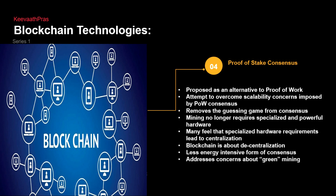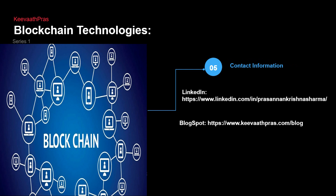As an alternative to proof of work, they are proposing proof of stake, which addresses scalability concerns and promotes going green by reducing electricity consumption. This removes the guessing game, which is extremely good. Miners no longer need specialized or powerful hardware — no intensive computation or propagation overhead. Blockchain is all about decentralization, and proof of stake achieves less energy-intensive consensus while also moving toward a greener approach.